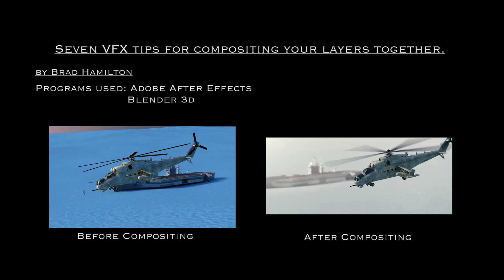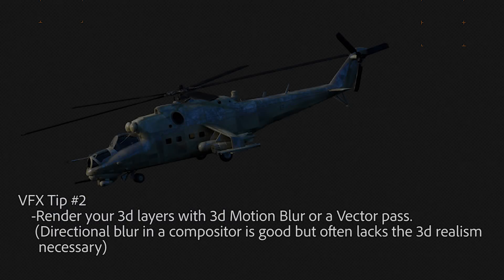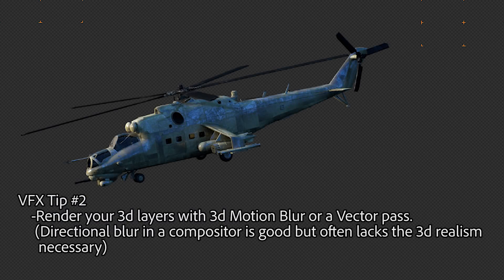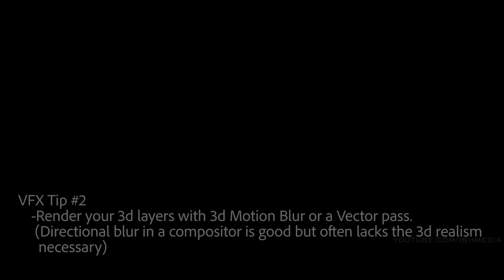The second thing I did that's pretty important for this particular composite is I rendered all of my CGI outputs from Blender with motion blur. By doing this, critical 3D motion blur was added to elements such as the rotor blades on the helicopter and the helicopter movement itself. This kind of 3D motion blur is hard to replicate inside a 2D compositor without a specific vector pass, so instead I did it on the output from Blender.